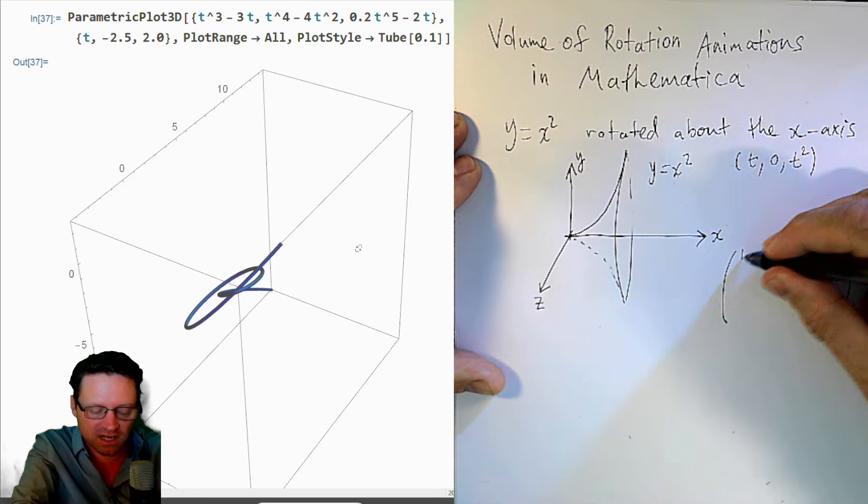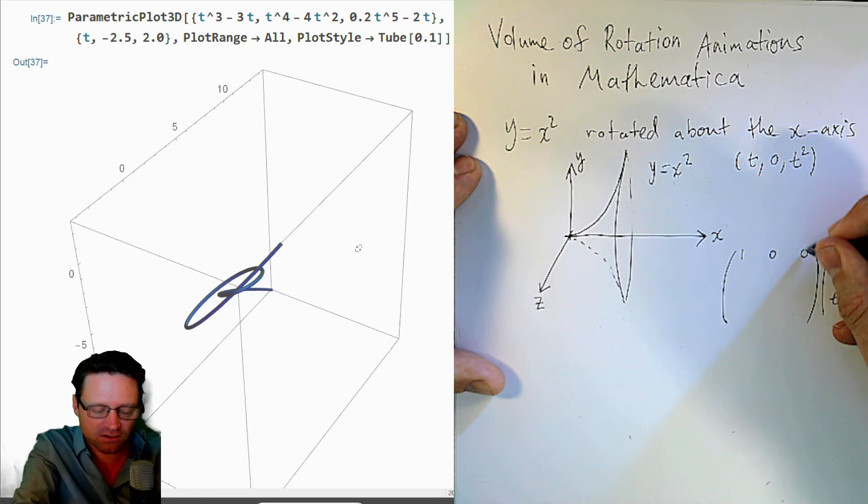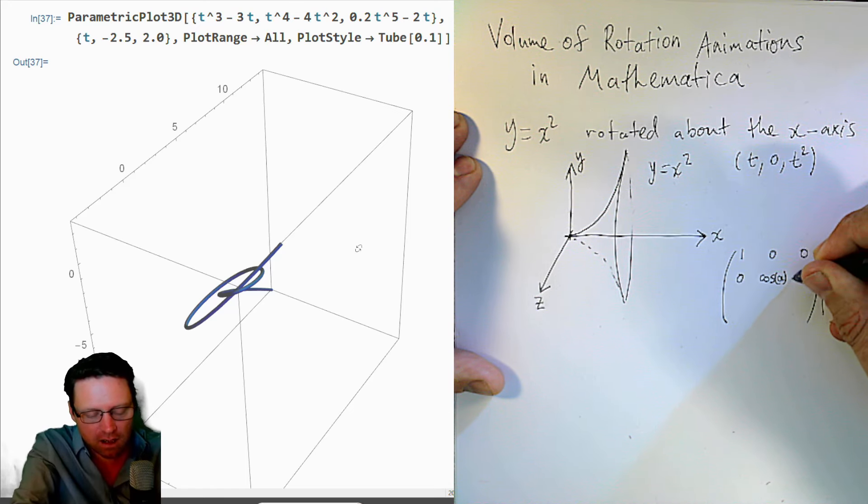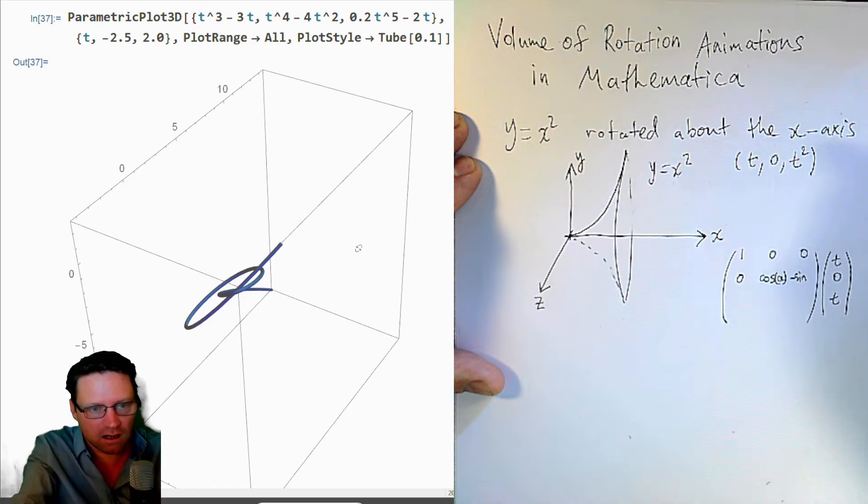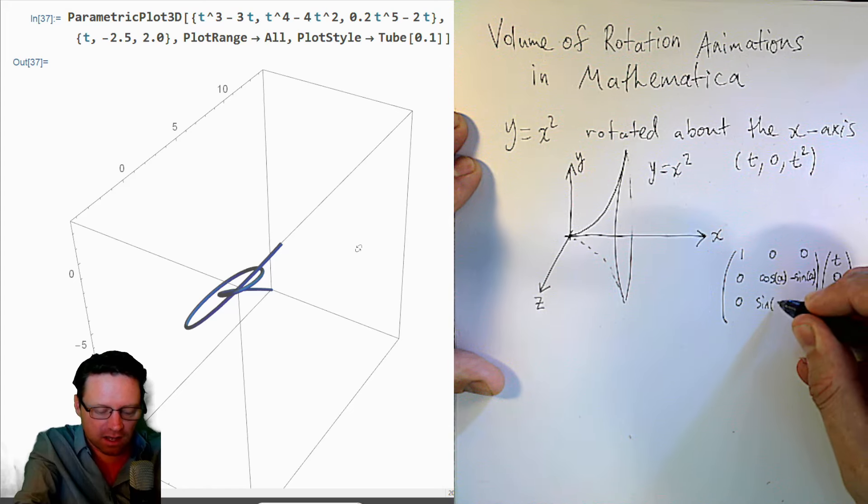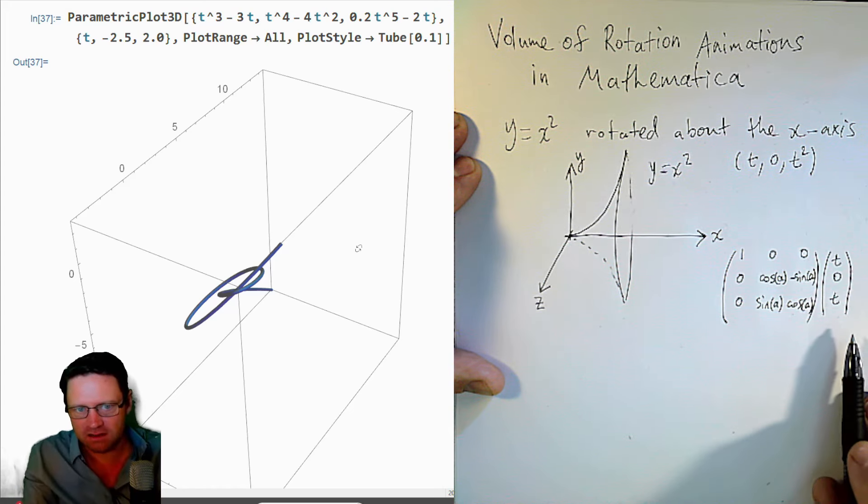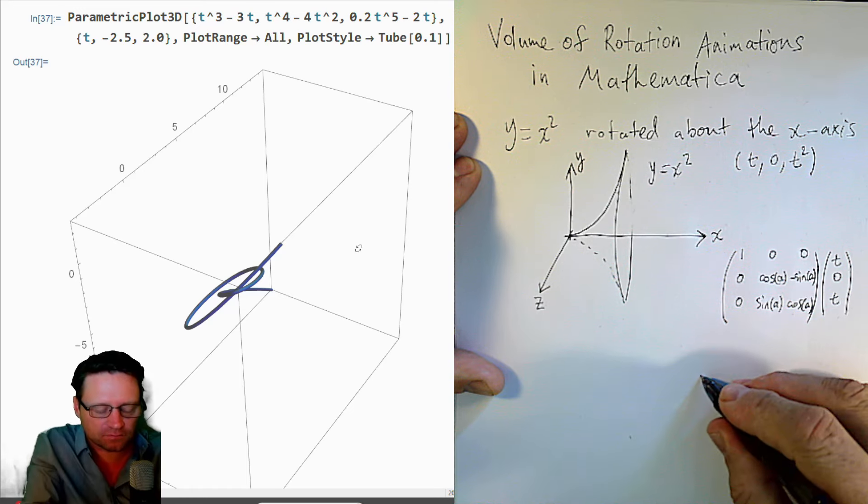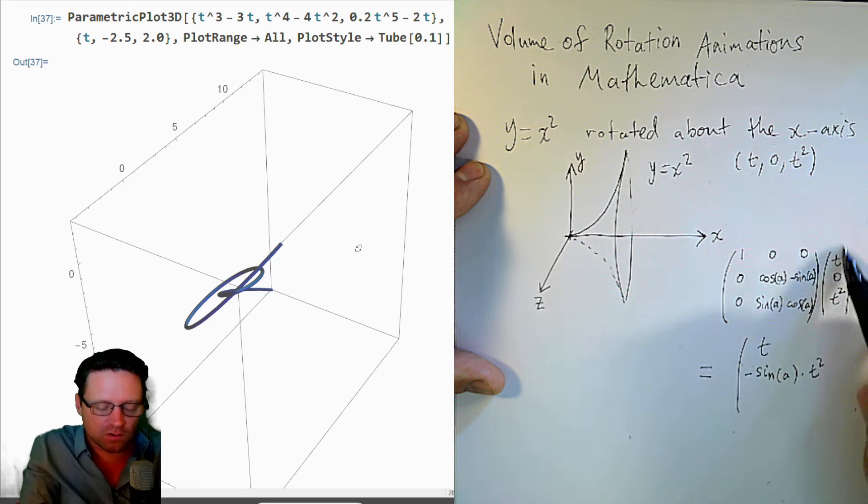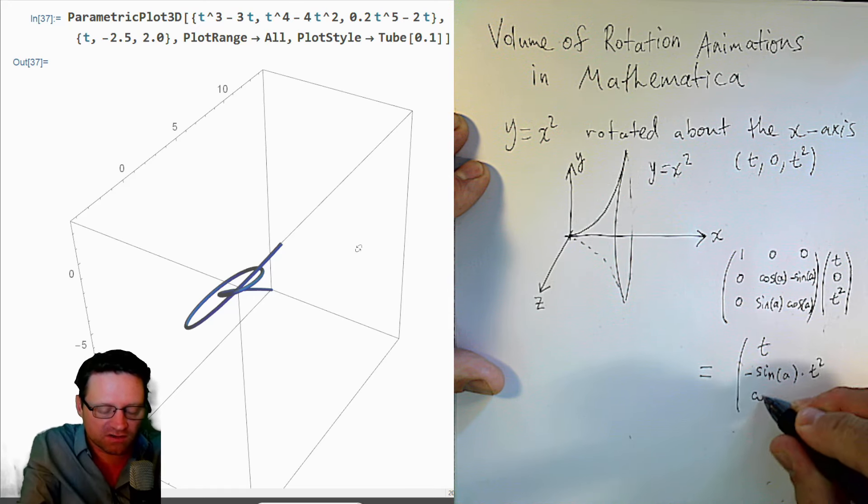I'll have a three by three rotation matrix. And then I will use the 3D rotation matrix: 1, 0, 0, 0, cosine of angle A, minus sine of angle A, 0, 0, sine of angle A, cosine of angle A. If we take the product of this, then what we get is, the last row times this would give us cosine of A times t squared.